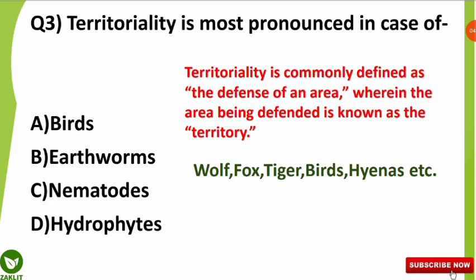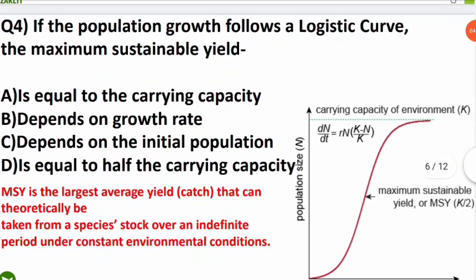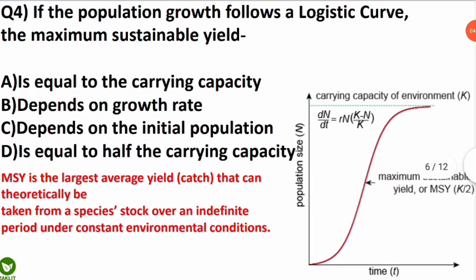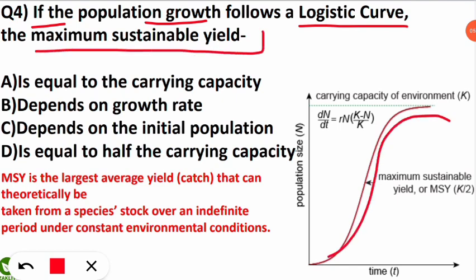Examples of territorial organisms include wolf, fox, tiger, birds, hyenas, and others. These organisms protect their area from similar individuals of the same species. The fourth question is from the growth curve, which is also a very frequently asked question in environmental science entrances. The question was: if the population growth follows a logistic curve, what is the maximum sustainable yield?